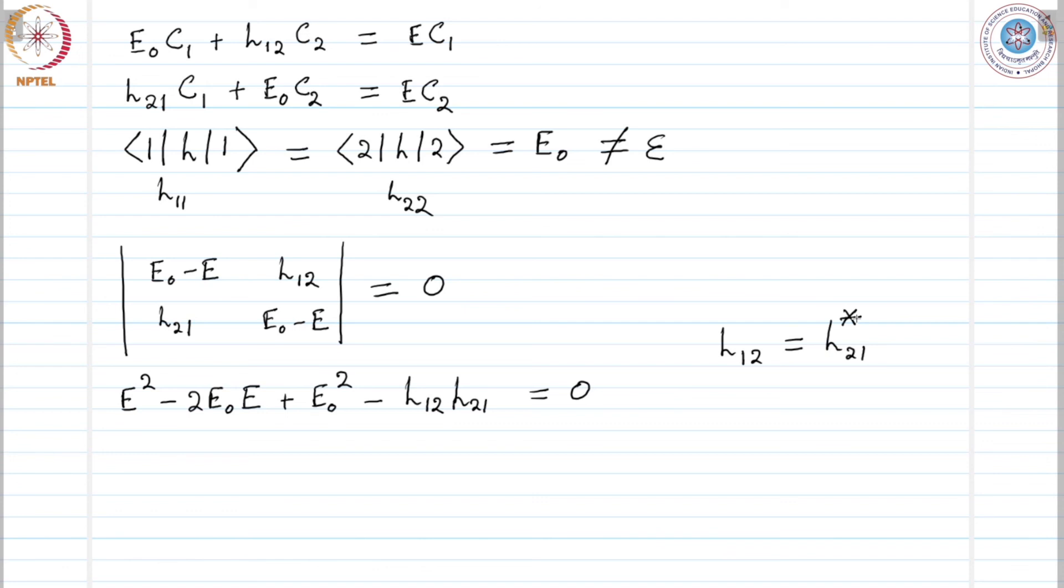So H21 complex conjugate is H21 itself, which equals H12. Let us call that another real number beta, which would be handy for writing.